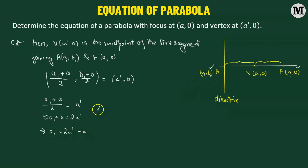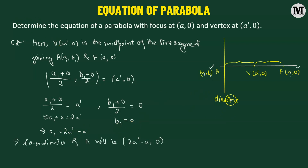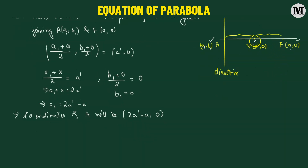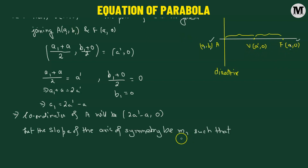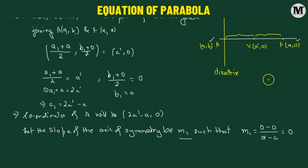Now we have the x-coordinate of point A. Let's find the y-coordinate. We have b1 plus 0 over 2 equals 0, so b1 equals 0. That means the coordinates of point A are 2a prime minus a, 0. Now let's find the slope of the axis of symmetry. Using the vertex and focus coordinates, slope m1 equals 0 minus 0 divided by a prime minus a, which equals 0. So the axis of symmetry is parallel to the x-axis.